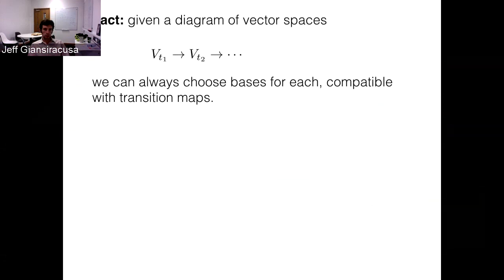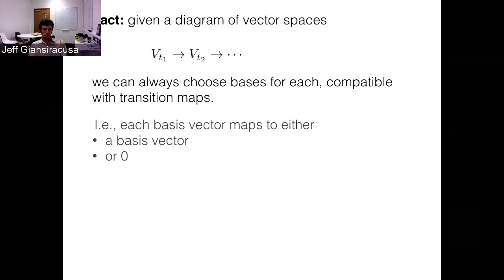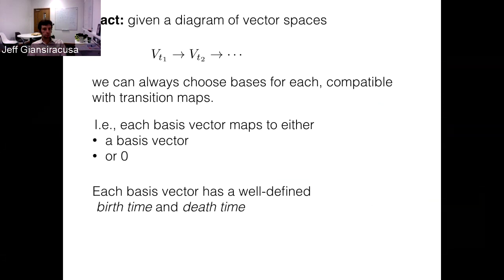A vector space indexed by the real numbers, where when you increase that indexing you have a linear map from one vector space to the next, is called a persistence vector space or persistence module. The fundamental fact is that if you have such a diagram of vector spaces, you can always choose bases for each of the individual vector spaces that are compatible with the transition maps — each basis vector is sent to either zero or a basis vector in the next one. Each basis vector then has a well-defined birth time and a well-defined death time.